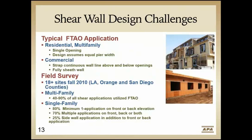We went into the field as well as into design offices to see what was being used before we began our laboratory research. Based on a field survey in Southern California for 18-plus sites in multifamily and single-family structures, we found that for multifamily, 40% to 90% of all shear applications utilized some amount of FTAO. For single-family structures, 80% had at least one application on the front or back elevation, 70% had multiple applications, and 25% had a sidewall application in addition to the front or back.